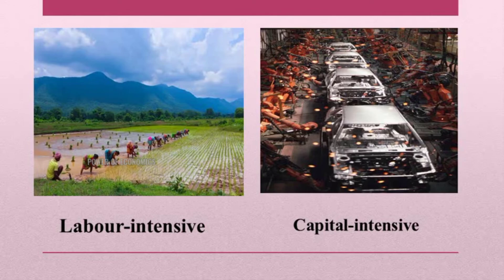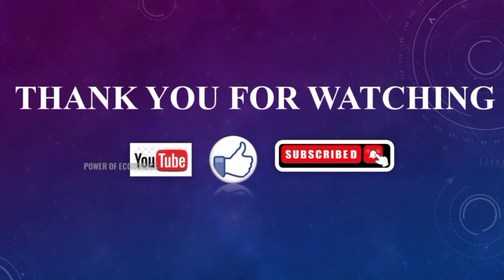In the next picture you can see cars being manufactured with the help of machines — there are no humans or laborers involved in the production. It is completely manufactured by machines. When production is carried out entirely by machines, it is called the capital intensive technique. Thank you for watching.